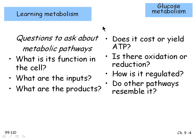This is the first place where we're starting to look at metabolic pathways. Before we get into these pathways, here are some questions to ask about any metabolic pathway: What is its function in the cell? What are the inputs and products? Does it cost or produce ATP? Are there oxidation or reduction steps? How is it regulated? Is it similar to other pathways? Use these as a checklist through this chapter and the following ones.